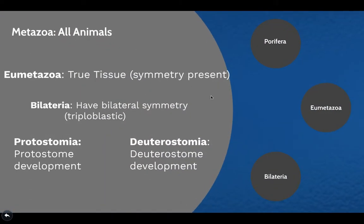The metazoan clade includes all animals whether or not they have true tissues or symmetry present. The eumetazoan clade are animals that have true tissues as well as some sort of symmetry. Bilateria is an even more specific clade in which organisms have bilateral symmetry and are triploblastic. The protostomia branch has protostome development, while the deuterostomia branch has deuterostome development.